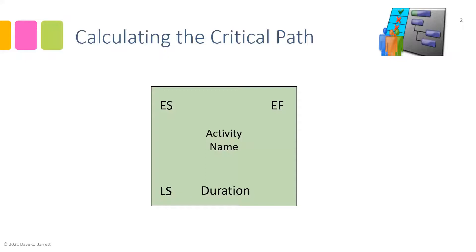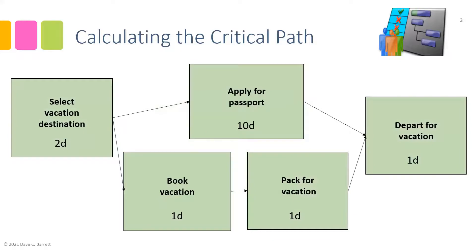The Late Start is in the lower left corner — this is the latest an activity may start. Late Finish is the latest an activity may finish, again given the activities, dependencies, and durations in the network diagram. The Total Float calculated for each activity is placed in its designated position. Those are the conventions we use, so let's go through the calculation process.